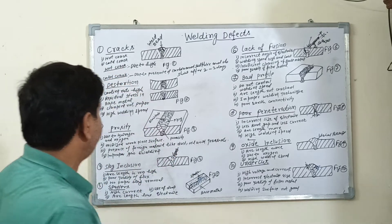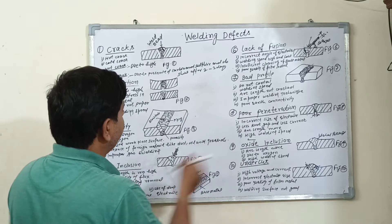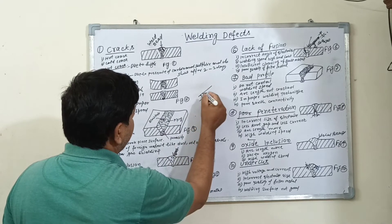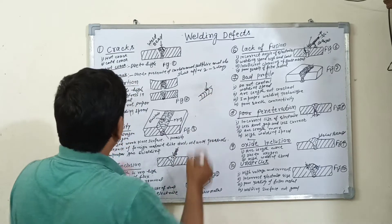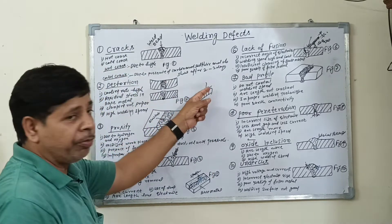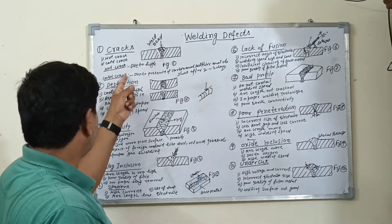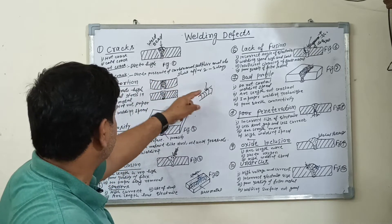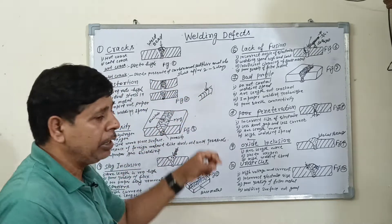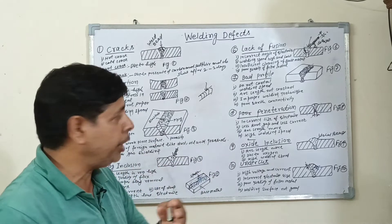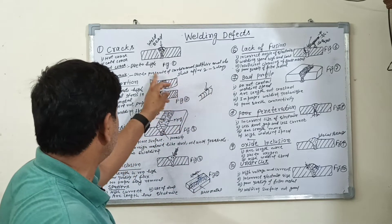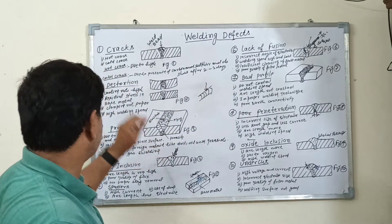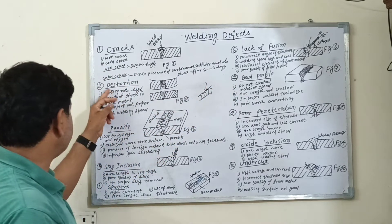When you are performing the welding bead, you can see the hot crack at the time of the welding process. The cold crack you can see after two or three days. This is due to the presence of carbon and sulfur.